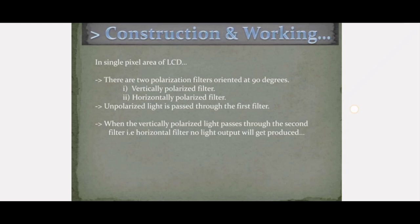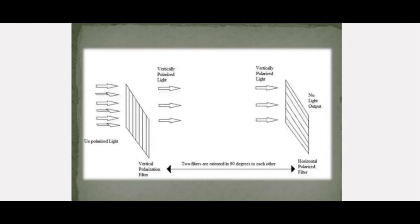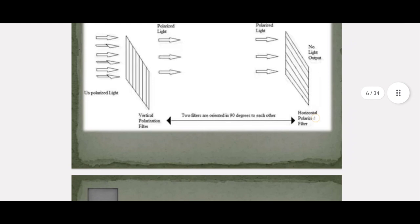This vertically polarized light is then passed through the second filter, that is the horizontally polarized filter. In this horizontally polarized filter, no light output will be produced. As shown in the diagram, unpolarized light passes through the vertical polarization filter to produce vertically polarized light, which then passes through the horizontally polarized filter so that no light output is produced. These two filters are oriented at 90 degrees to each other.